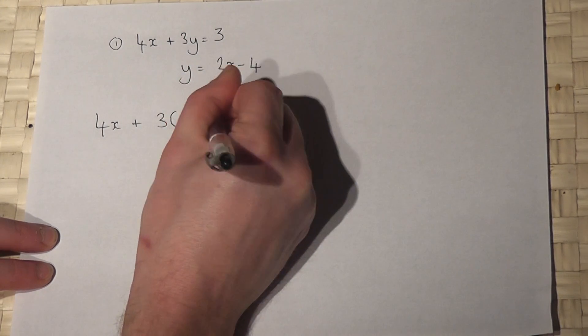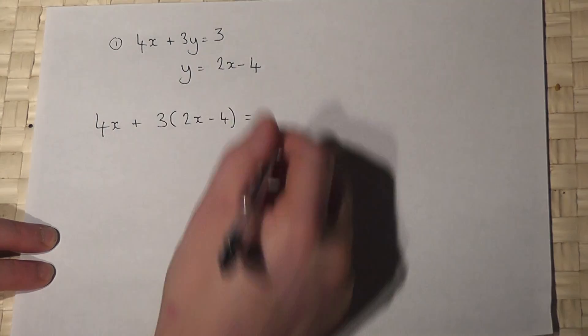So, bracket 2x minus 4, and that equals 3.